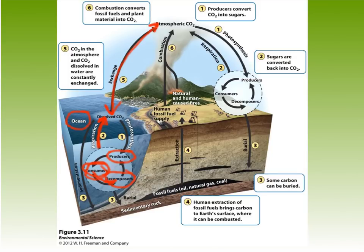Some CO2 dissolves into the ocean, grabs calcium, and precipitates out of solution, slowly floating to the bottom. Over a long time, this results in limestone sedimentation at the bottom of the ocean. This process is called sedimentation and occurs because carbon dioxide combines with calcium to form calcium carbonate.